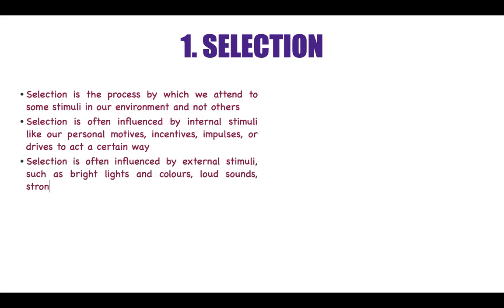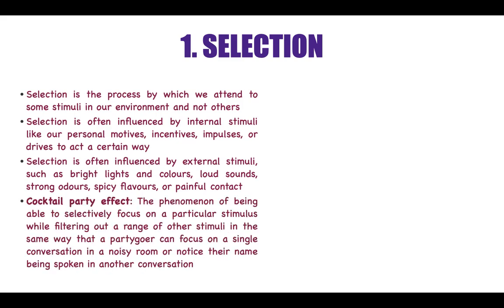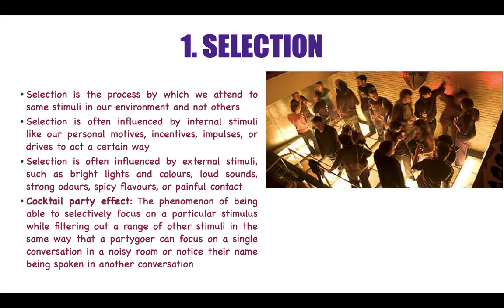External stimuli could be bright lights and colors, loud sounds, strong odors, spicy flavors or painful contact — all these may lead to selection of certain objects, events or persons while rejecting other information. For example, let's look at the cocktail party effect while we are doing selection. When we are at a party, we focus on one particular stimulus and filter out a range of other stimuli.